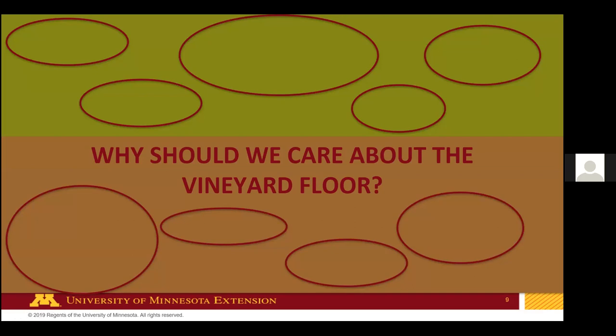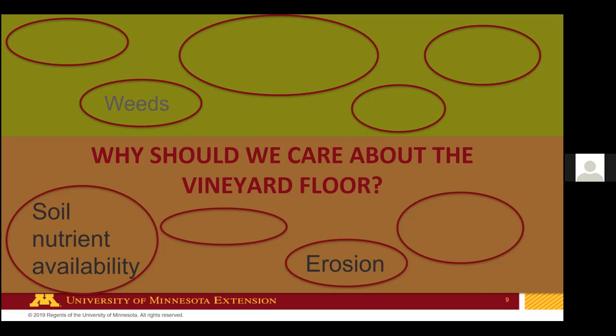Why should we care about what's happening on the orchard floor? Above ground, these covers impact weeds — many growers become interested in under-row ground covers to suppress weeds without herbicides. Below ground, a major benefit is erosion control: more plants on the soil helps keep that soil in place. Regarding soil nutrients, something like clover can fix nitrogen, but grasses can also take nutrients from the soil, so we need to think about this in both positive and negative ways.